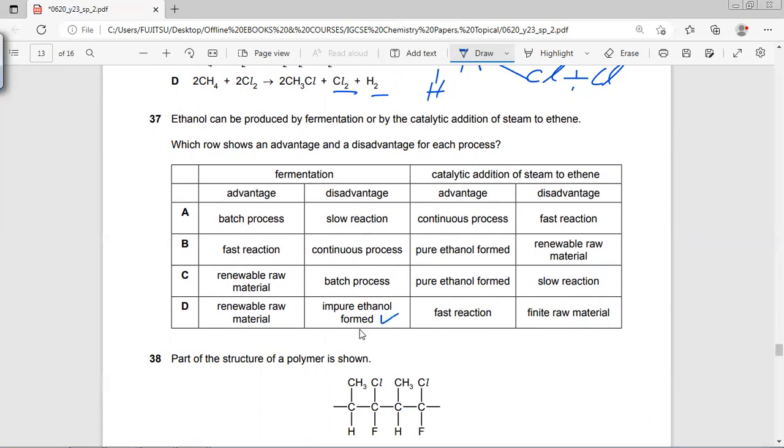But most important thing, most important disadvantage is that impure ethanol is formed. The advantage is that you can use crops like sugarcane and maize.